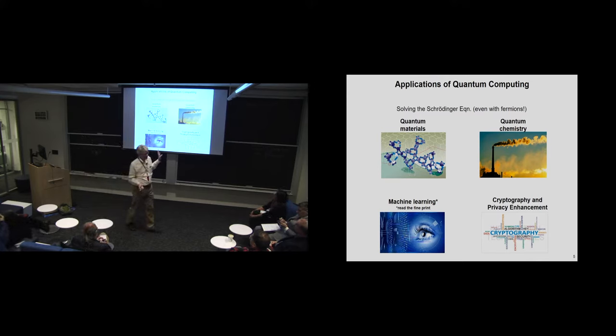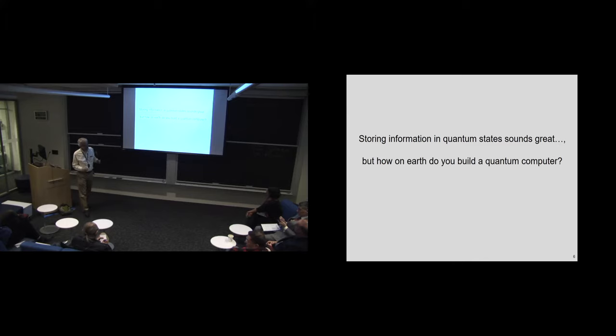So a register of n conventional bits can be in one of two to the n states. The quantum register can be in an arbitrary superposition of all those at the same time. There are many such superpositions and you know a simple way of counting them gives you two to the two to the n which grows obviously extremely rapidly with n. So even a small computer, you know people say oh you're never going to build a computer with ten million bits or a hundred million bits that might actually be true.